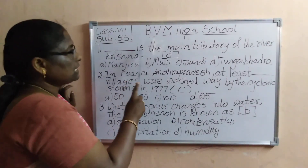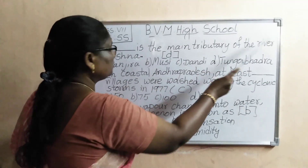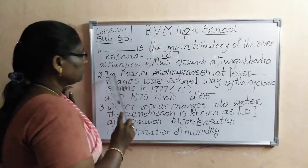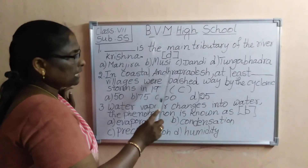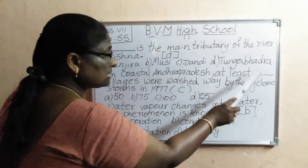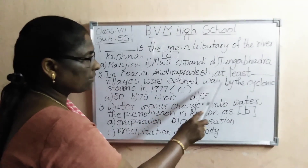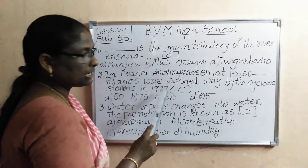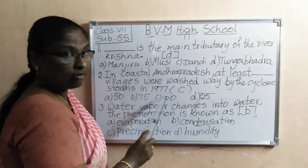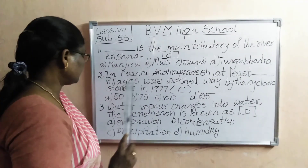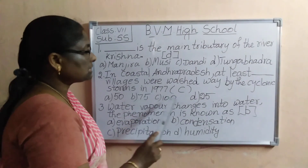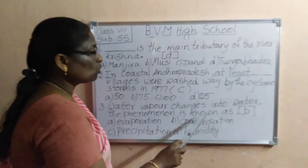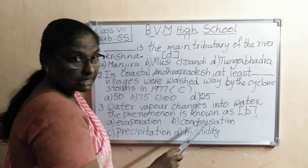Dash is the main tributary of the river Krishna — that is Tungabadra. In coastal Andhra Pradesh, at least 100 villages were washed away by the cyclonic storms in 1977. Water vapor changes into water — the phenomenon is known as condensation.